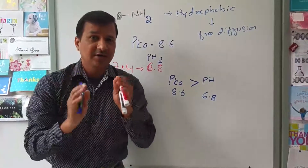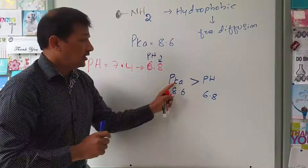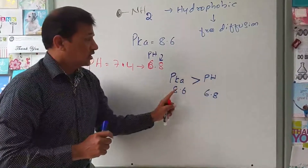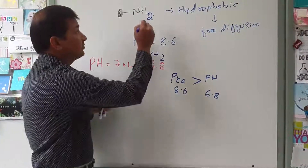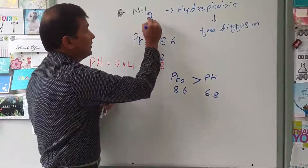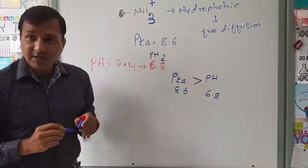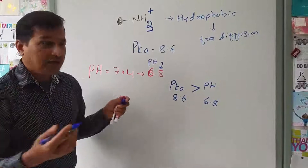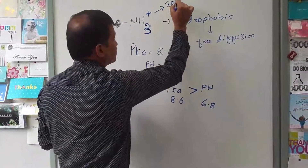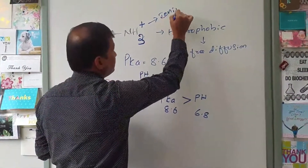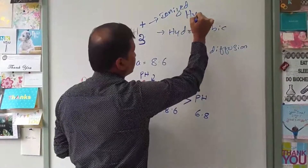Since pKa is more than pH, the amino group undergoes protonation and becomes NH3+. When it becomes NH3+, it is now an ionized molecule — this is the ionized form — which means it is hydrophilic.